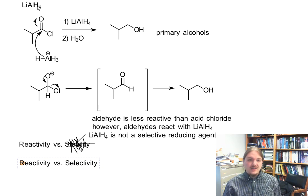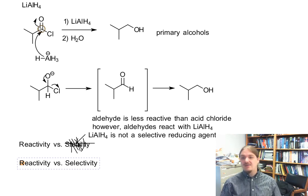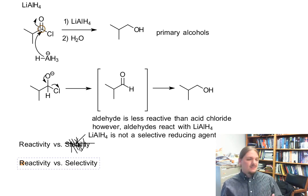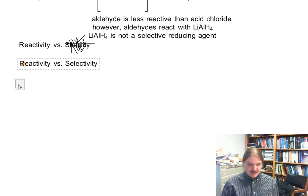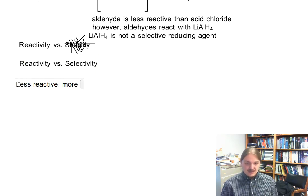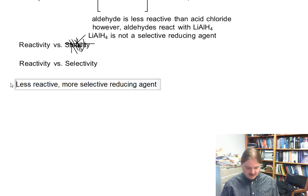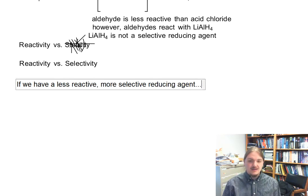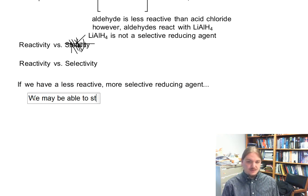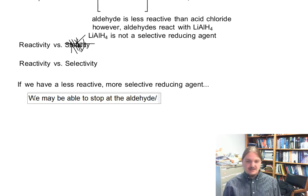In our initial case, we have lithium aluminum hydride — the most reactive reducing agent — and an acid chloride, the most reactive carbonyl compound towards nucleophiles. This is a recipe for going all the way. If we had a more selective, less reactive reducing agent, we may be able to stop at the aldehyde, since the aldehyde is less reactive as well.